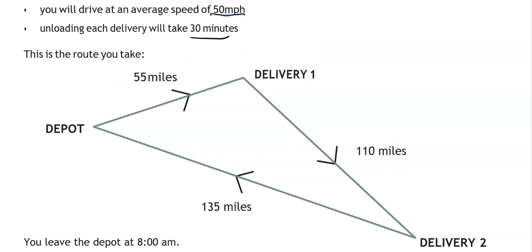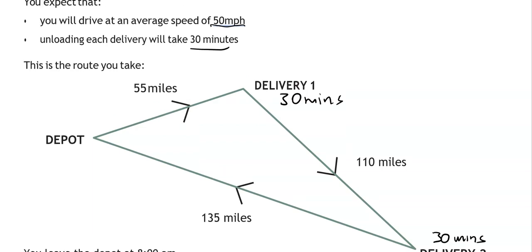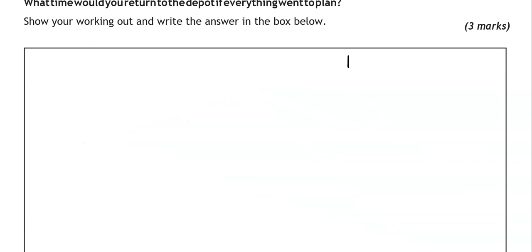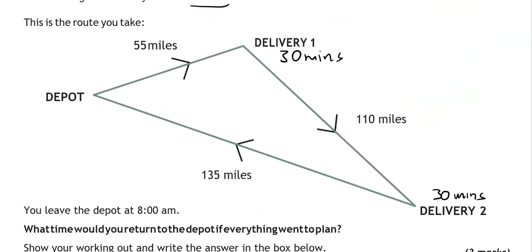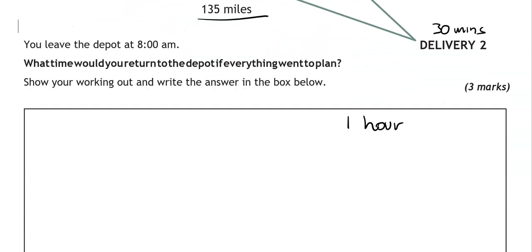So for each delivery it will take 30 minutes. So there's 30 minutes here as well. So 30 minutes and 30 minutes makes 1 hour. And looking at the miles in total. We've got 55, 110, 135. Adding them all together. So it's 300 miles.